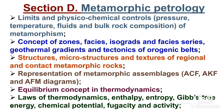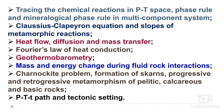Representation of metamorphic assemblage data using ACF, AKF, and AFM diagrams, and equilibrium concepts in thermodynamics — laws of thermodynamics, enthalpy, entropy, Gibbs free energy, chemical potential, fugacity, and activity — are included. Tracing chemical reactions in pressure-temperature space, the phase rule and mineralogical phase rule in multi-component systems, the Clausius-Clapeyron equation, and slope of metamorphic reactions are also important. Heat flow, diffusion and mass transfer in metamorphic environments, Fourier's law of heat conduction, geothermobarometry, and mass and energy changes during fluid-rock interactions are included.